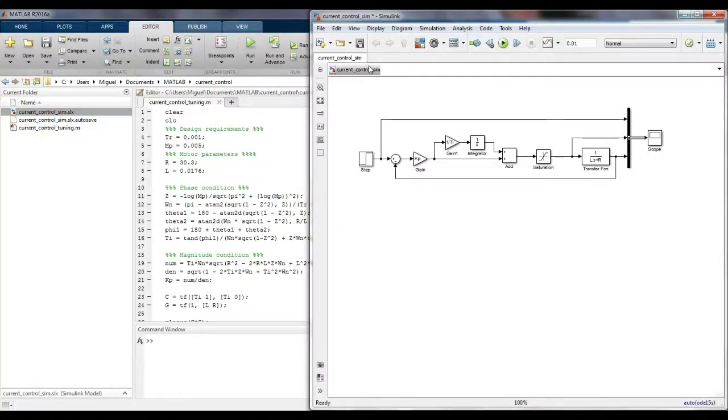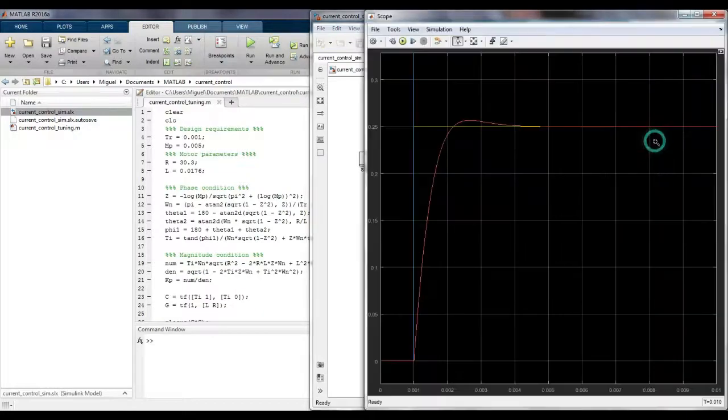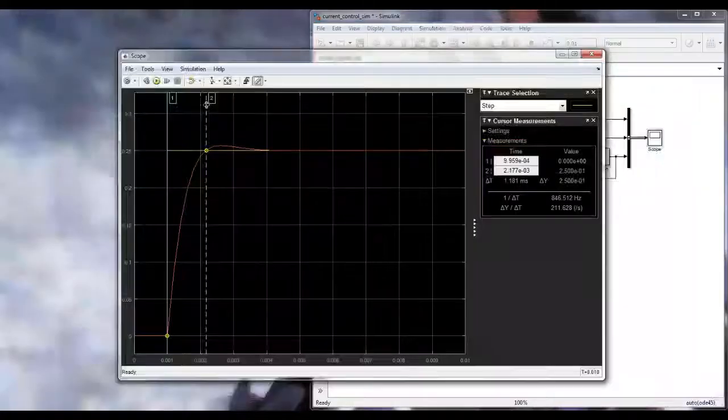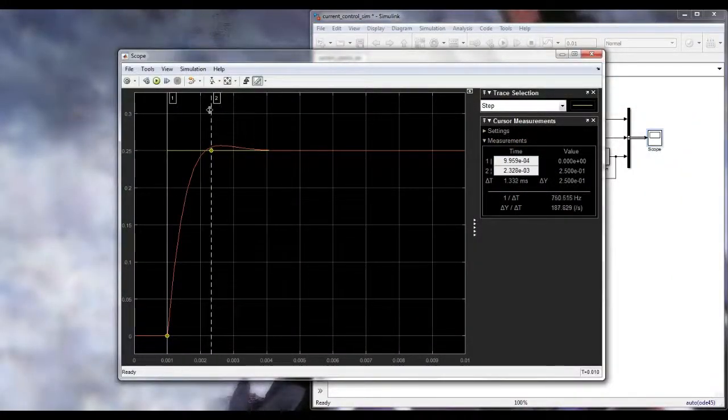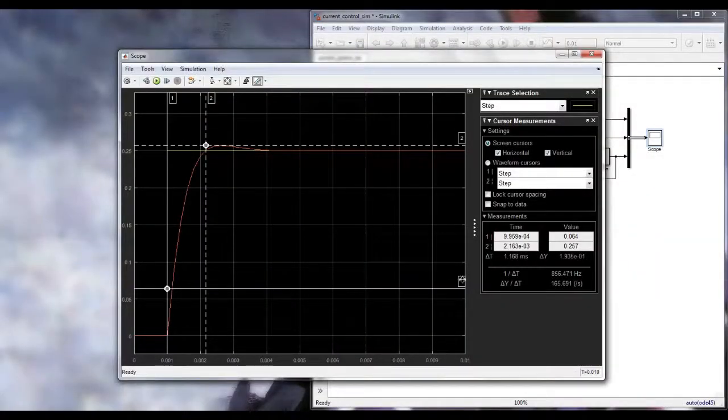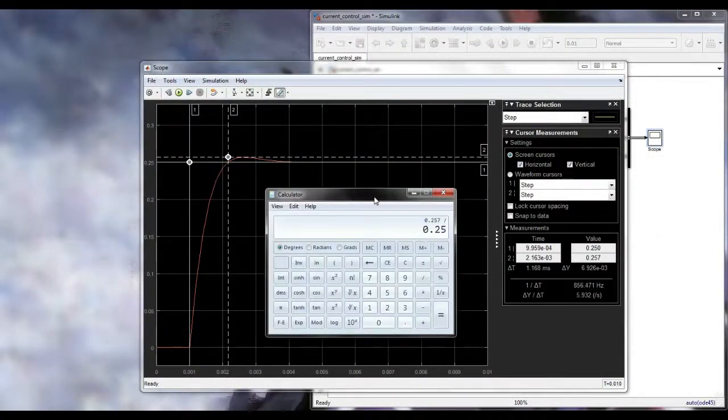But to be sure, I design a closed-loop system to simulate the response to a step of 0.25 amps. The response shape is awesome, and the response time is less than 1 ms. However, the overshoot is around 3%, which is not bad at all.